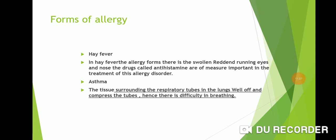There are different forms of allergy. The first is hay fever. In this form, there are swollen, red, and running eyes and nose. The drug called antihistamine is of major importance in the treatment of this allergy disorder. Second form is asthma.